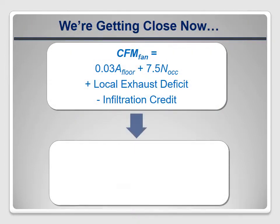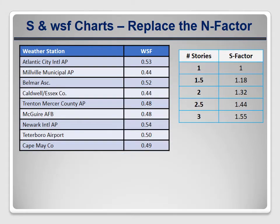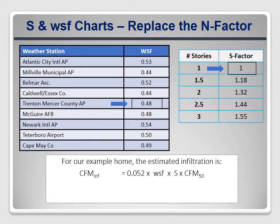The base formula gave us a total required ventilation rate of 74 CFM, and the shortfall in local exhaust means we add another 5 CFM to compensate. Now all we need is the infiltration credit. For our example house, the weather and shielding factor (WSF) is 0.48, based on the closest weather station in Trenton, and the S factor is 1 because it's a one-story house. Plugging those into the equation with the blower door reading: estimated natural infiltration = 0.052 × 0.48 × 1 × 2000 CFM = 50 CFM. That's our infiltration credit.